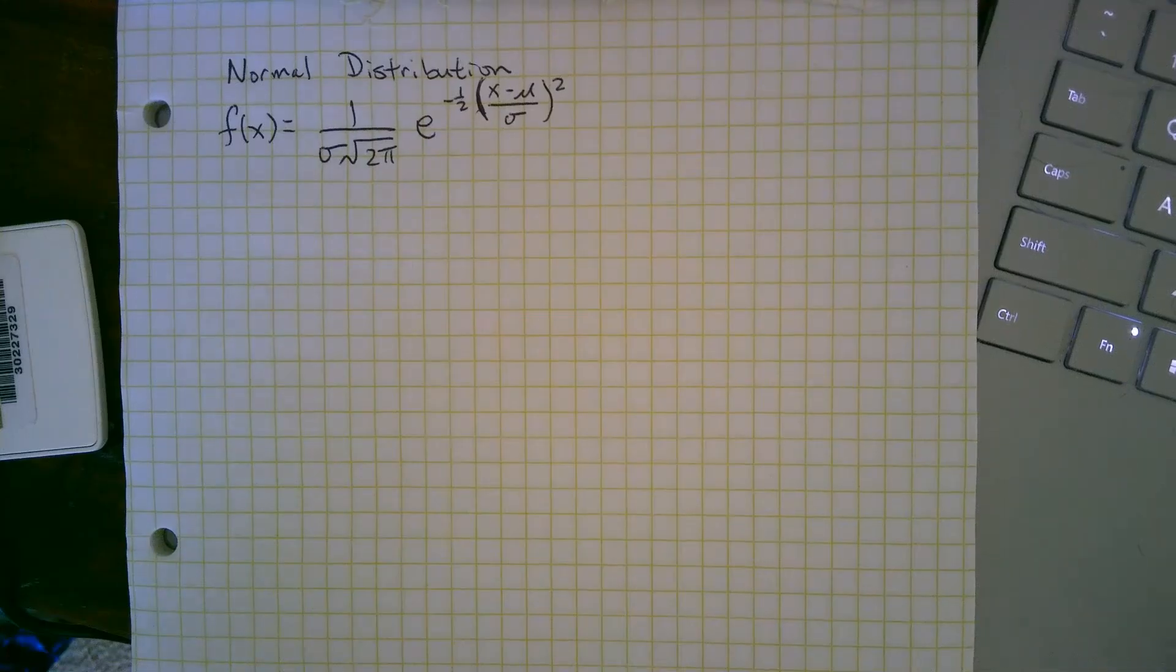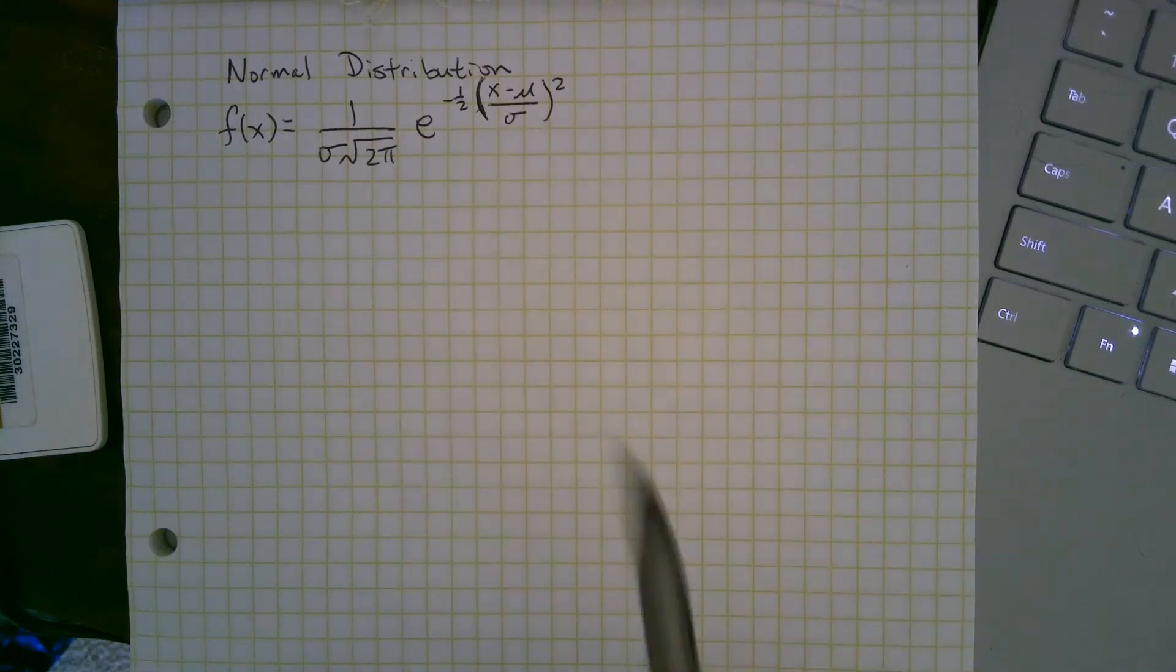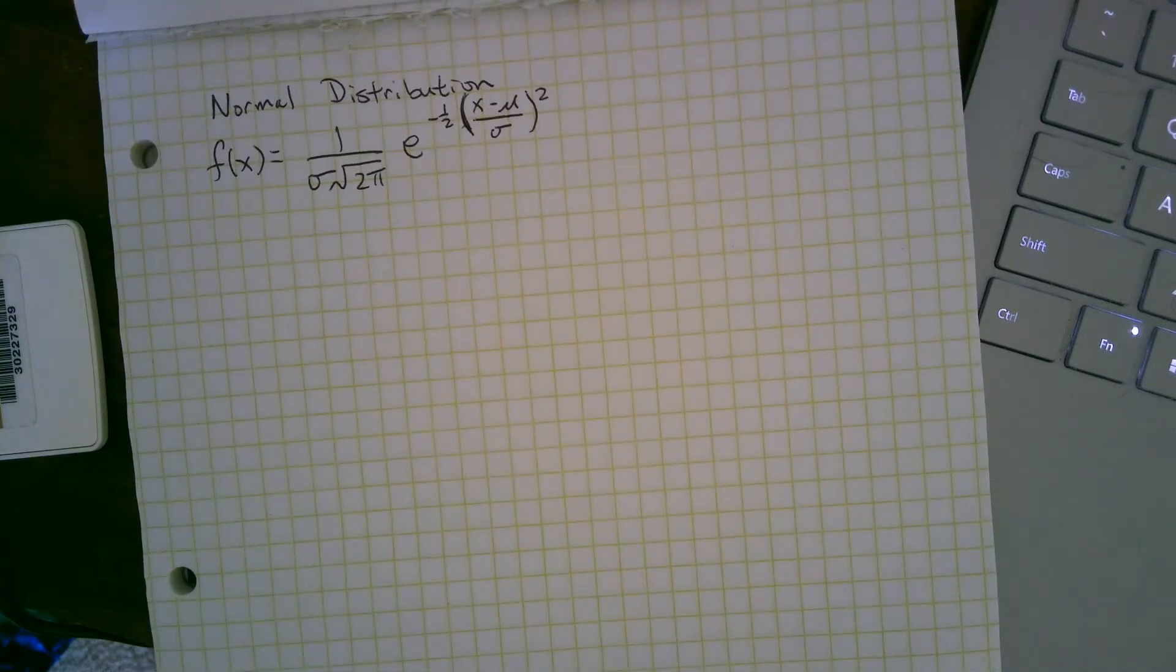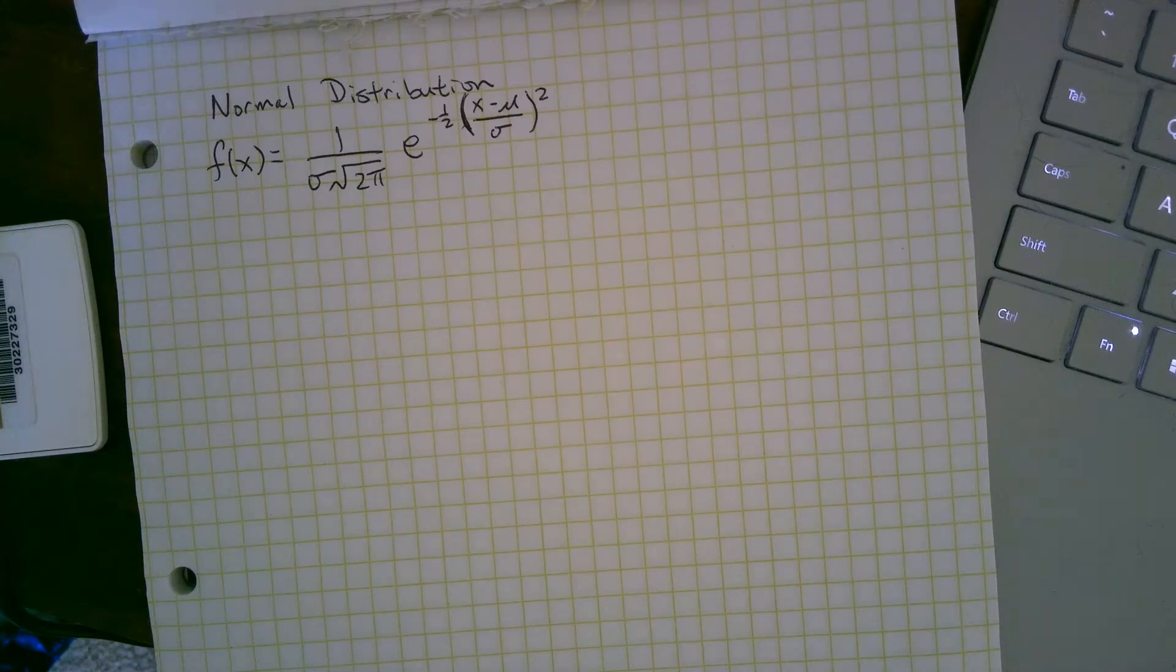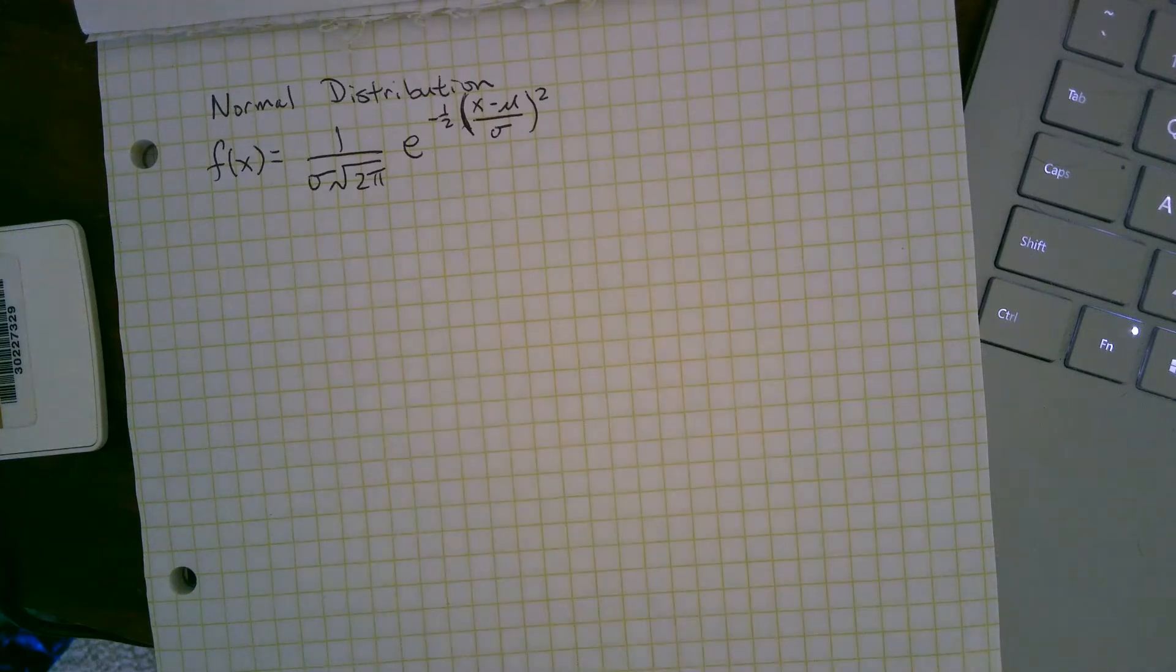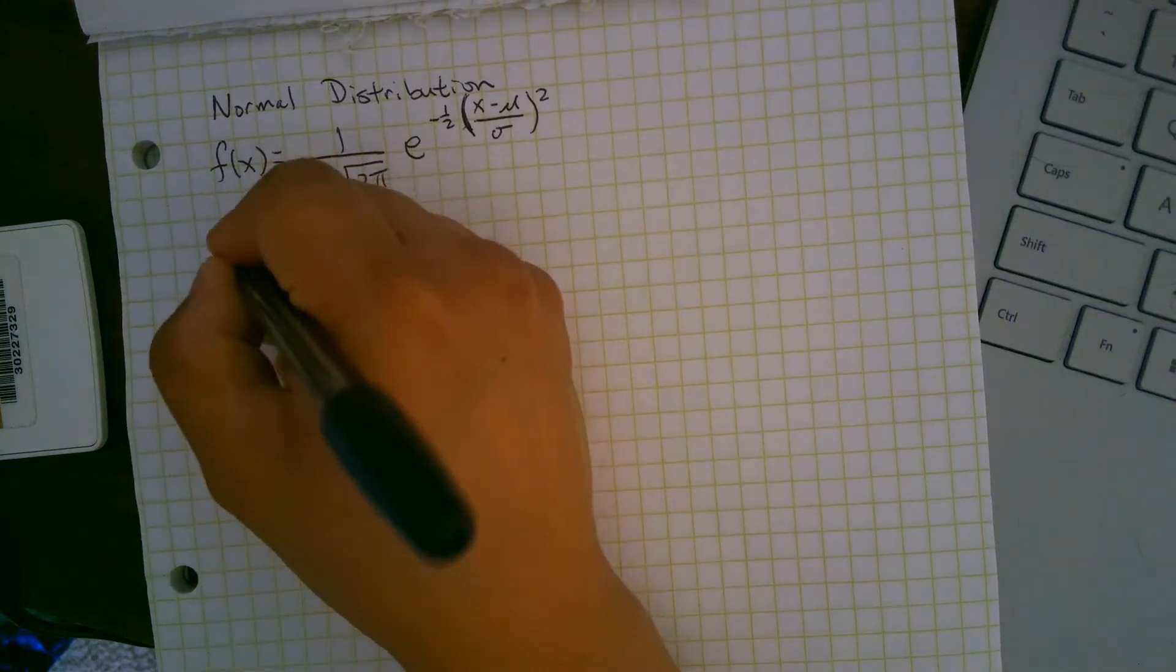Okay, so here's this very complicated and unintuitive formula for normal distribution. Like, I don't know, what is this root 2 pi thing? Where did E come? I mean, E shows up everywhere. But still, where did E come from? Why is sigma in two different places? Who knows? And what are these things?